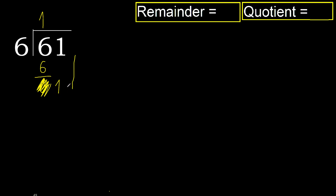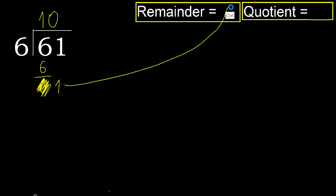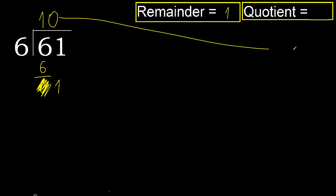That is not a number, therefore finish it — therefore complete. Always complete with 0, complete with 0 because we finish it with this number. 1, 10. So the answer is 10.